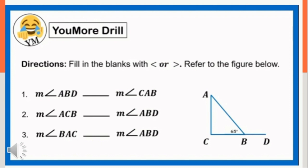Let's try to fill in the blanks with less than or greater than. Refer to the given figure. Angle ABD is the exterior angle. Angle ABC is the supplementary angle of angle ABD. Angle ACB and angle CAB are the remote interior angles of angle ABD. For number one, the answer is greater than — angle ABD is the exterior angle and angle CAB is one of the remote interior angles. For number two, the measure of angle ACB is less than the measure of angle ABD. For number three, the answer is less than — angle BAC is one of the remote interior angles and angle ABD is the exterior angle.